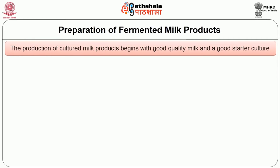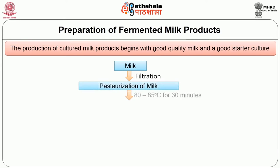As shown in the figure, the milk is first subjected to filtration to remove physical dirt. This is followed by pasteurization of milk at 80 to 85 degrees Centigrade for 30 minutes in a boiling pasteurizer of 50-liter capacity. Pasteurization is a process where milk is heated at a very high temperature in a pasteurizer so that growth of microorganisms is prevented, making the milk very sterile.